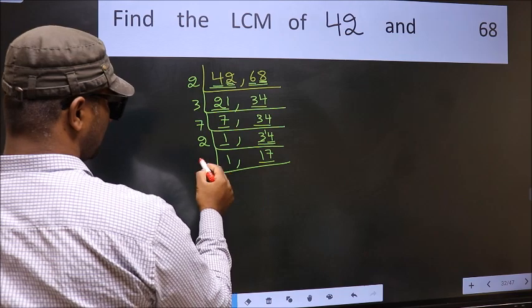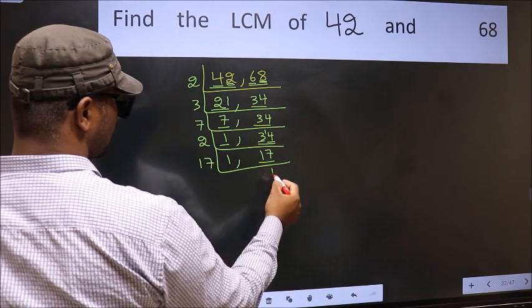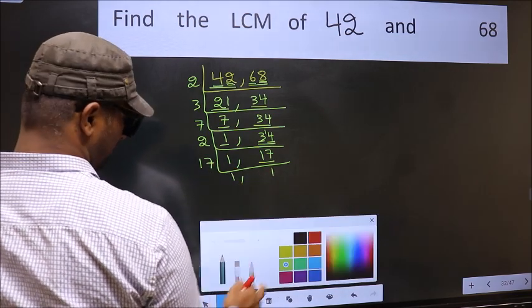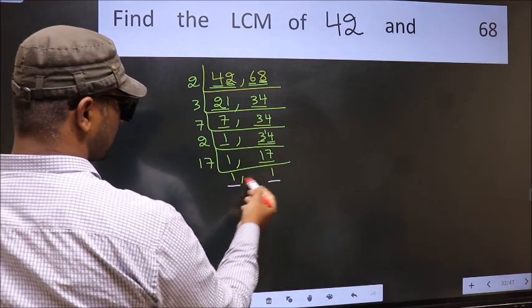Now here we have 17. 17 is a prime number, so 17 times 1 is 17. So we got 1 in both places.